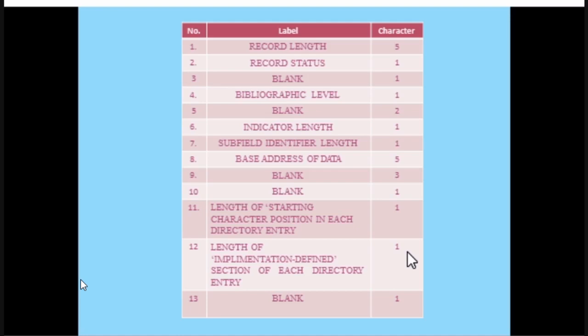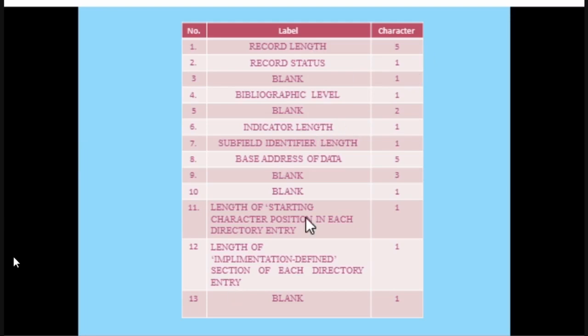Looking at the data of a record label: all the numbers constitute 24 characters, which are the subunits of the record label. Record length is five characters; status is one character; bibliographical level and indicator length and subfield are also included. These are the subfields of the record label. This is the uniformity — based on these numbers you can identify what each part is. You don't need to understand each and every detail because this is only for exchange purposes.